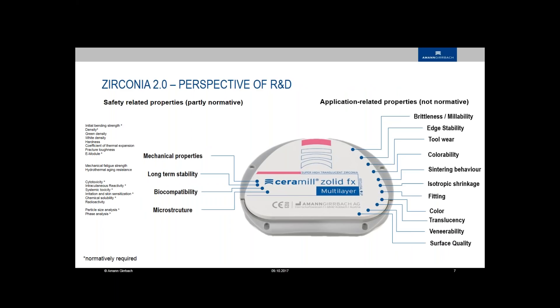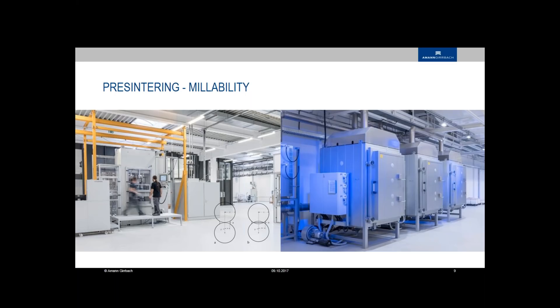All these application related properties are not normative. Nobody says you have to do this but we take care about these properties. When we start for example with the first three: brittleness, millability, edge stability, tool wear. That means that the blank is very easy to mill and you have tools that have low level of wear. It starts in our production. We are pressing and pre-sintering the material. The particles are brought together and pressed with a high force and then it's pre-sintered. We have a little necking of the particles and you can make a lot of mistakes already in this step but this production steps are the most important for the blanks.